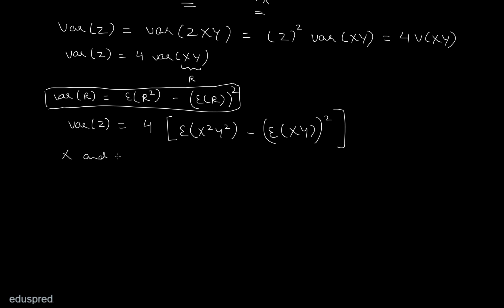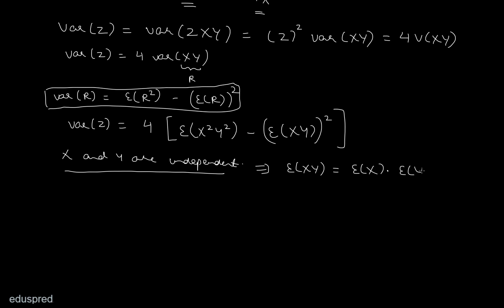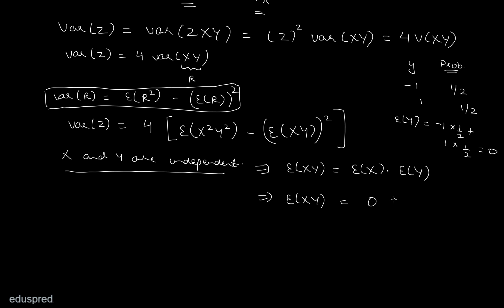Recall that x and y are independent random variables, which implies expected value of xy equals expected value of x multiplied by expected value of y. The expected value of y equals minus 1 times half plus 1 times half, which is minus half plus half, equal to zero. And since x follows a normal distribution with mean zero, expected value of x is also zero. So expected value of xy equals zero times zero, which is zero. That means the squared term is zero squared, so we can eliminate it.